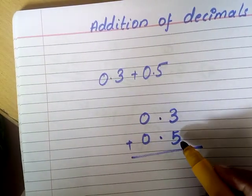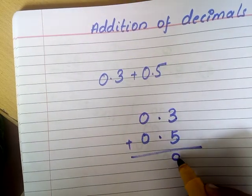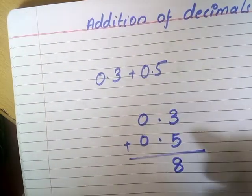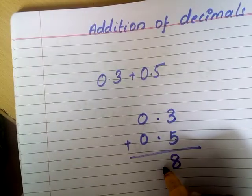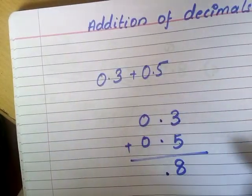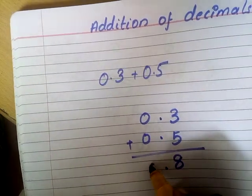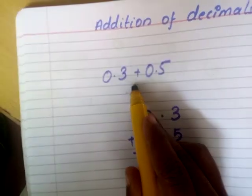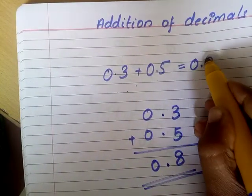Now you can add the decimals. 5 plus 3 is 8, no carryovers. Now insert the decimal in the answer also, then go for the addition of the whole number part. Since here it is 0, 0 plus 0 is 0. So 0.3 plus 0.5 gives us 0.8.